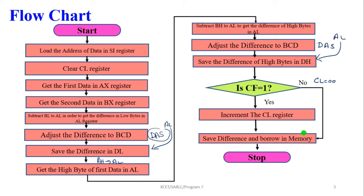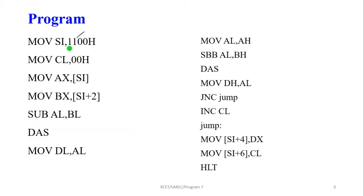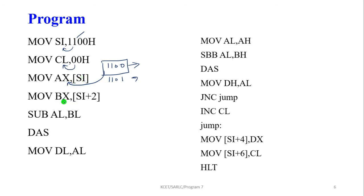Now writing the program: first, load the starting address into the SI register. Clear the CL register since it stores the borrow value. Memory address 1100 is our starting address — the value there is moved into AX. Memory location 1100 contains the low byte moved into AL, and location 1101 contains the next byte moved into AH. Then MOV BX, [SI+2] — meaning addresses 1102 and 1103 are loaded into BX.